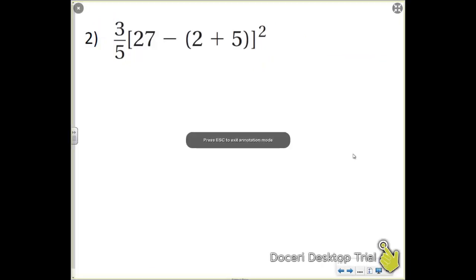So the first thing I'm going to do is the innermost parentheses. So we're doing PEMDAS. So we're going to do the 2 plus 5. So we have 3 fifths brackets, 27 minus, and then 2 plus 5 is going to give us the 7. Close our brackets. And then a 2, or power 2.